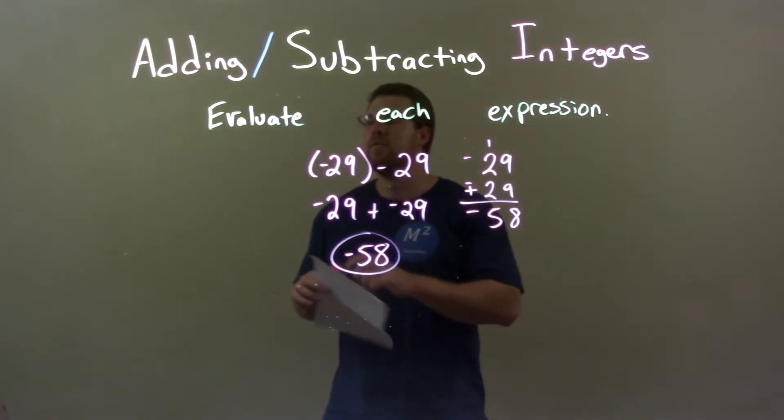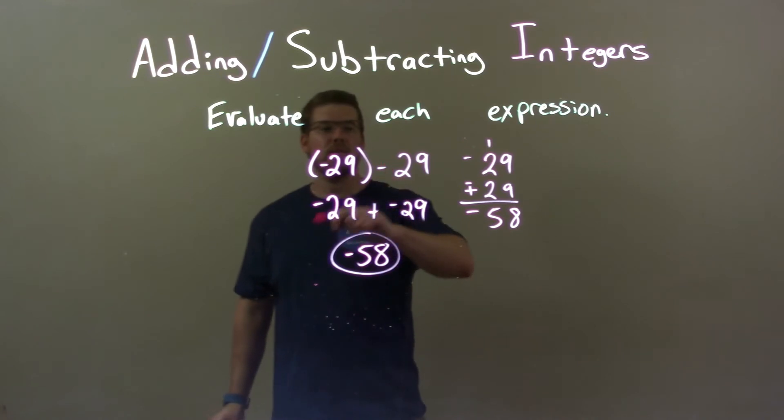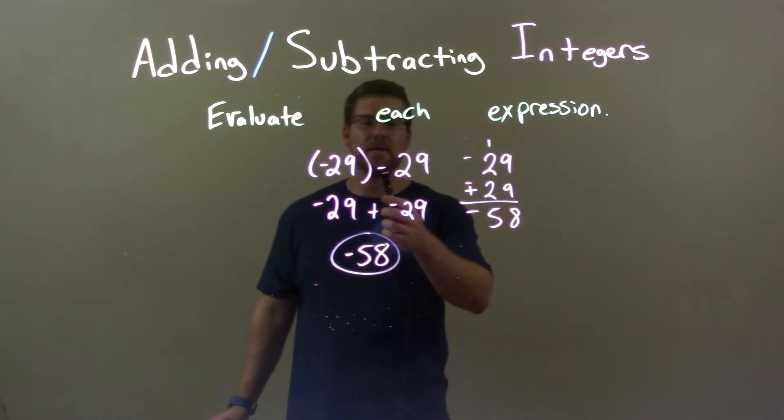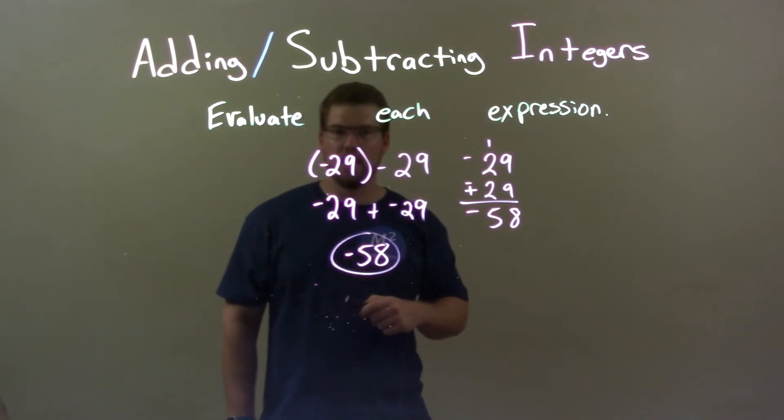So quick recap, we're given negative 29 subtracted by 29. When we know subtracting a number, a positive number, is the same thing as adding a negative. So we have negative 29 plus a negative 29.